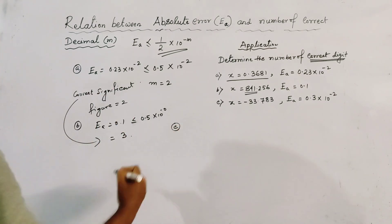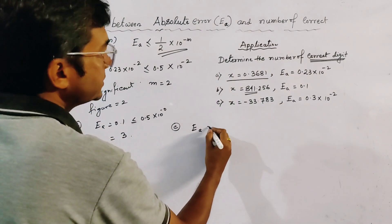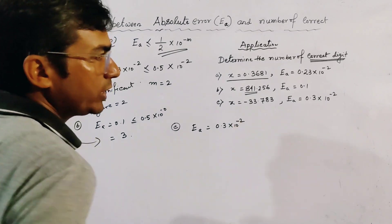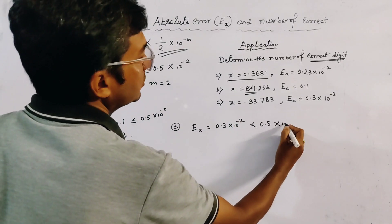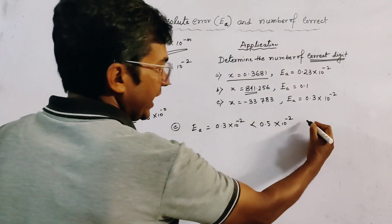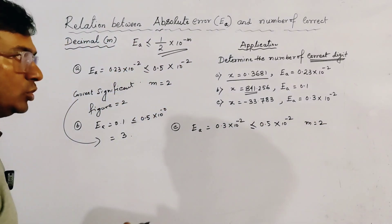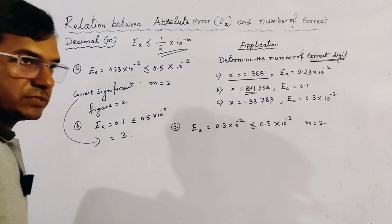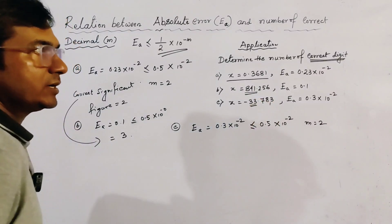For case (c), ea = 0.3 × 10^(-2), which can be written as less than or equal to 0.5 × 10^(-2). So m = 2, meaning this number is correct up to 2 decimal places. Before the decimal, there are 2 significant figures.